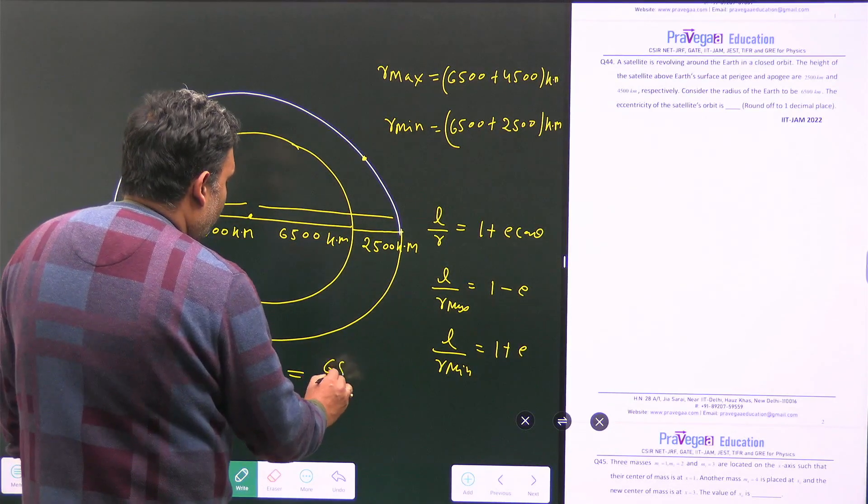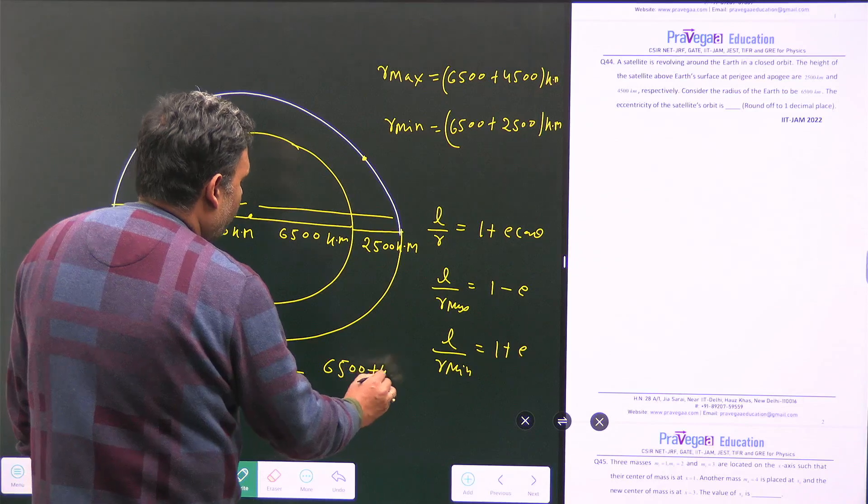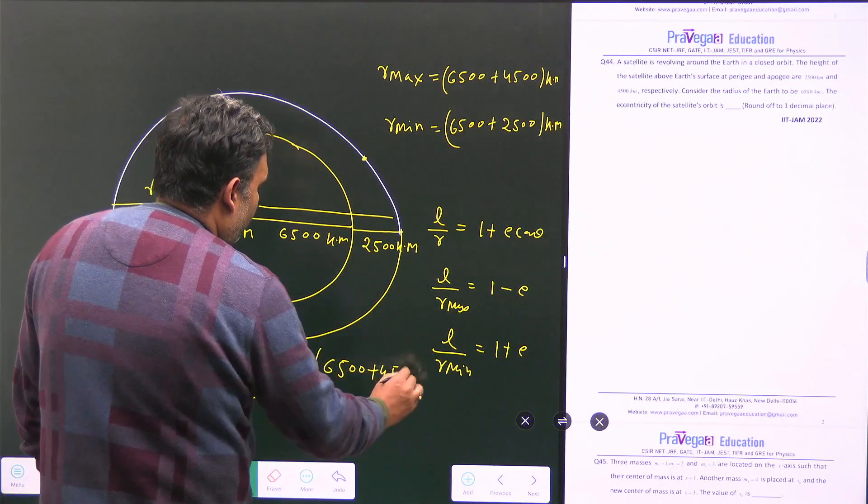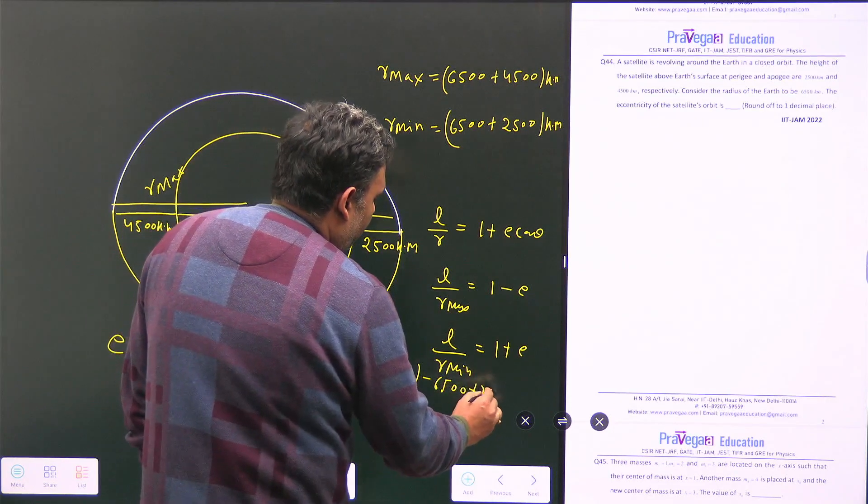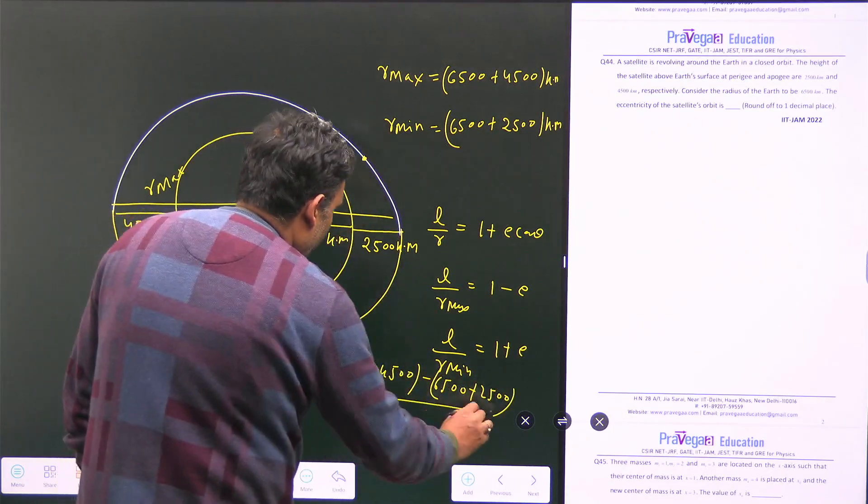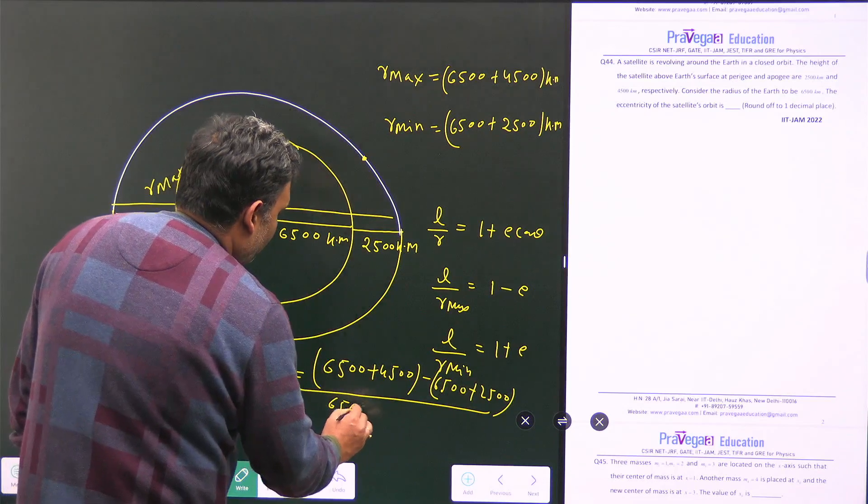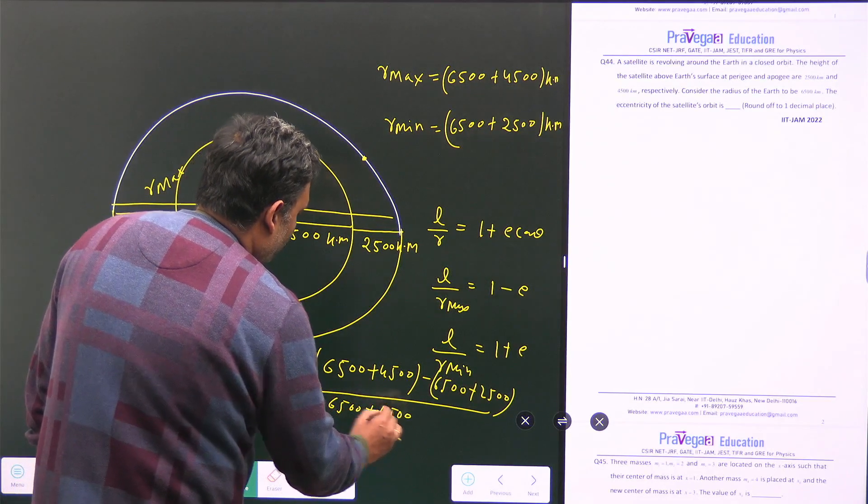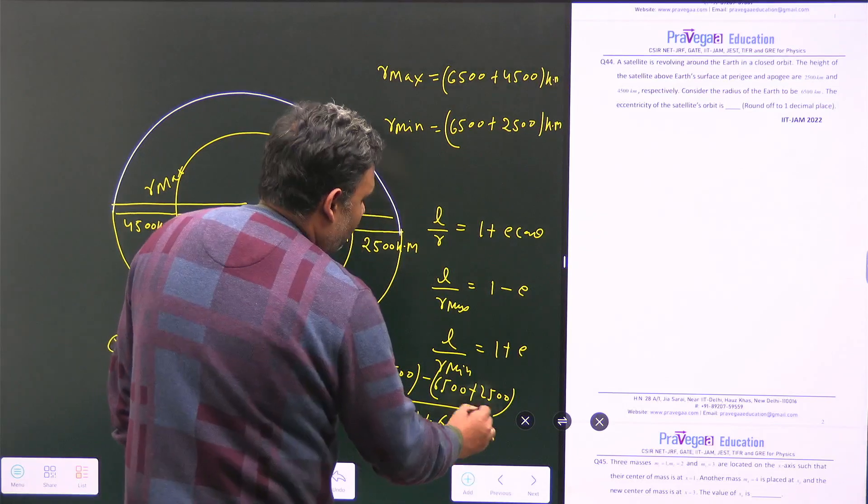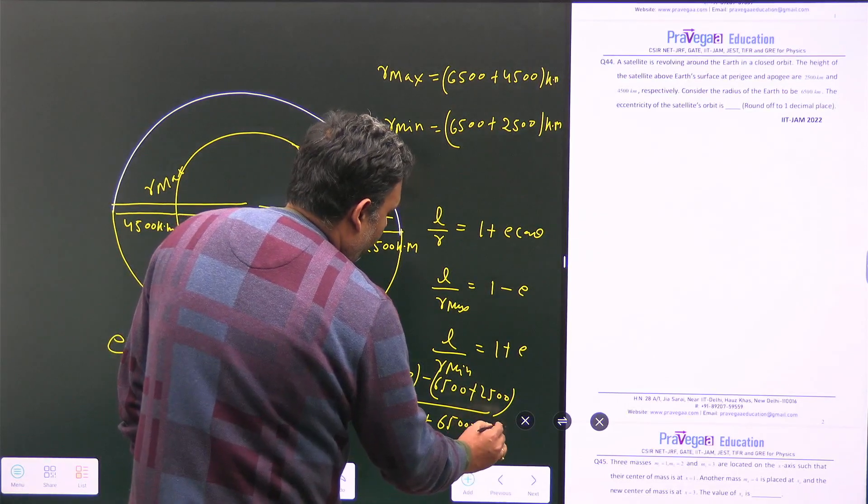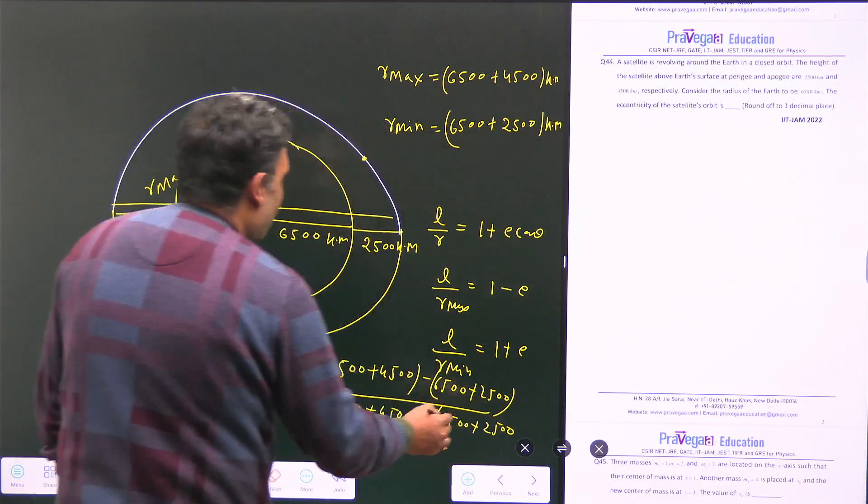And when you will put this value, so this value is 6500 plus 4500 minus 6500 plus 2500 divided by 6500 plus 4500 plus 6500 plus 2500. So when you will calculate this thing,